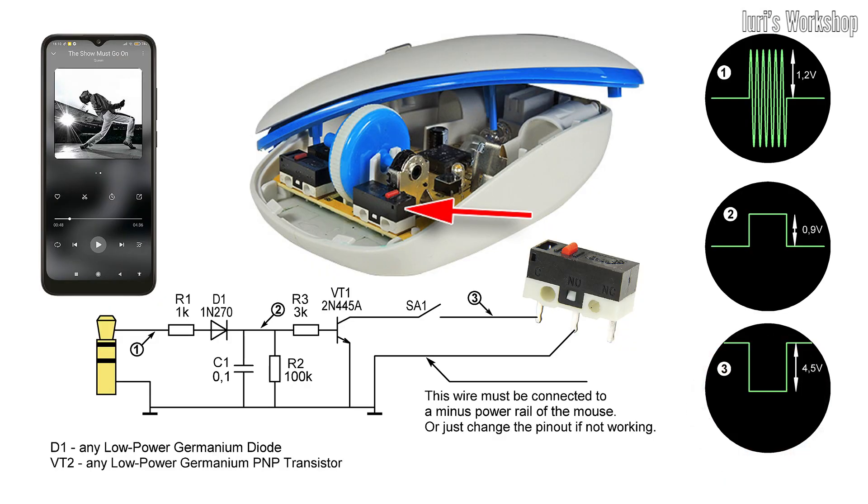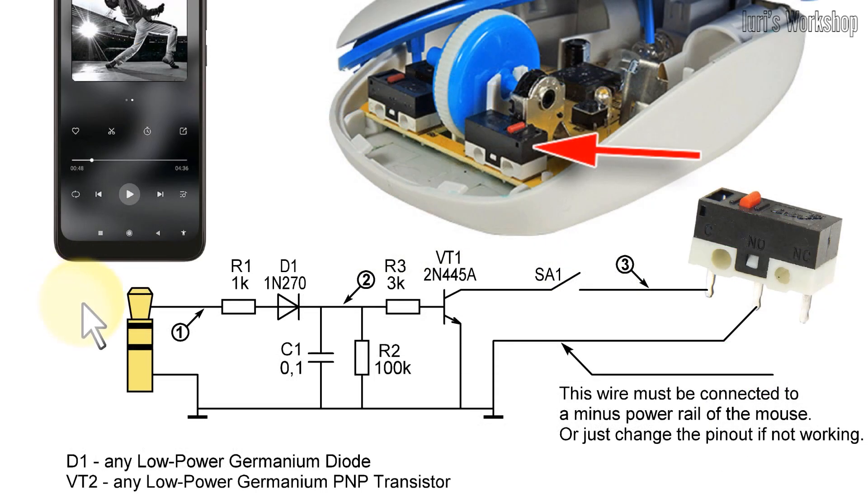This scheme works very simply. The control signal from the audio output of a smartphone, player, or computer goes to an integrating circuit consisting of a diode and a capacitor. The integrated signal goes to the base of the transistor. The transistor opens and closes the left mouse button circuit.